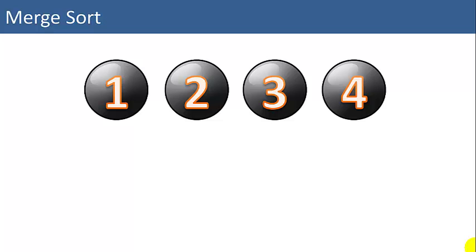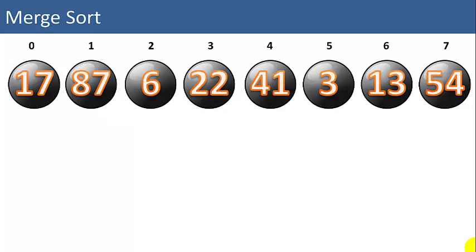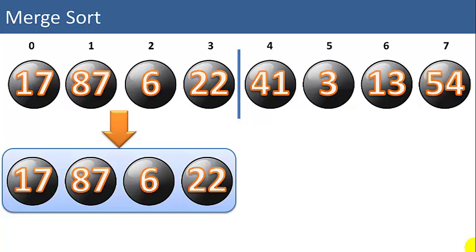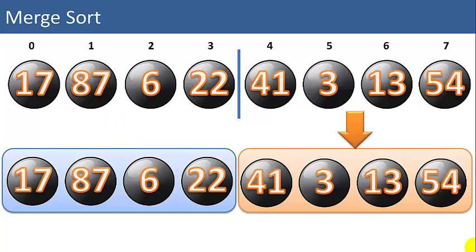That, in a nutshell, is how merge sort works. I'm going to walk through a more detailed example with 8 items in the list. We'll number the items from 0 to 7, and we'll start by splitting the list in half — a left list and a right list, each with 4 items.